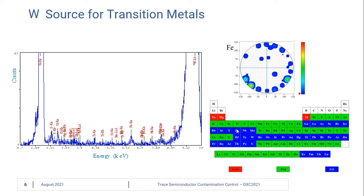Here's an example of our tungsten L beta 1 measurement spectrum. We use the tungsten L beta 1 line at 9.67 keV because it's a suitable excitation for the elements in green — the K lines of silicon through zinc — and then we use the L lines of the heavier elements in green to measure with this line.